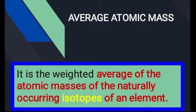Gold element کے atoms آپس میں similar ہوں گے اور silver element کے atoms آپس میں similar ہوں گے، تو اس طرح ایک element دوسرے element سے different ہو جاتا ہے — they have different types of atoms۔ لیکن یہاں بات ہو رہی ہے average atomic mass کی۔ Again ہم definition کی طرف جاتے ہیں: it is the weighted average of the atomic masses of the naturally occurring isotopes of an element۔